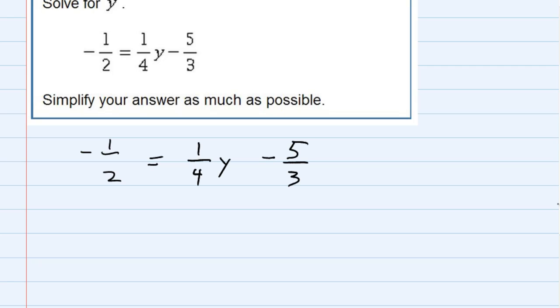I'm just rewriting it to give myself a little bit more room. To get rid of the fractions, I need to find the lowest common denominator. So between the two, the four, and the three, my lowest common denominator is 12. So the LCD is 12.